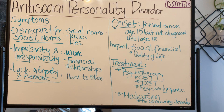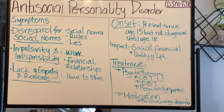When it comes to the symptoms, you're talking about the disregard for social norms. Somebody who is dealing with ASPD is going to have a disregard for social norms and rules, usually manifesting in behavior such as being deceitful, repeatedly lying about things, and disregarding their safety or the safety of other people.